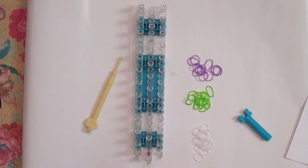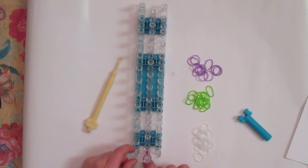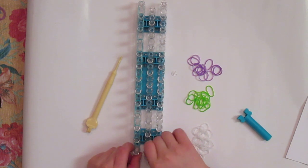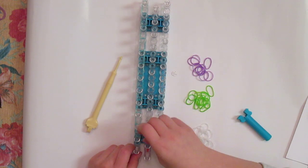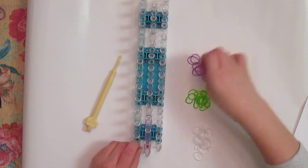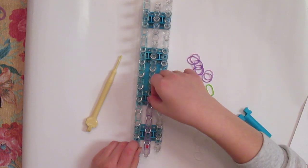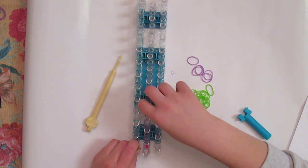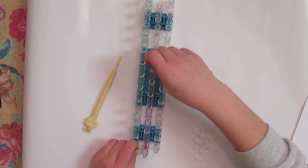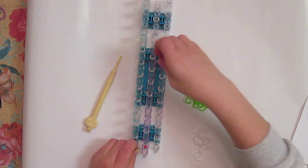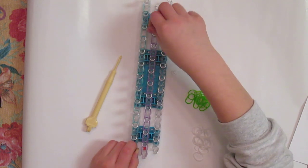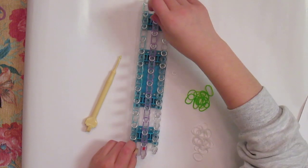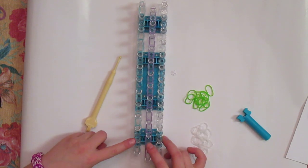Now I'm going to use my purple and you can use whatever color you've chosen. So from the center pin you have to go forward and then you go forward all the way to the last pin. Now that I've gotten all the way to the end, this is what your loom should look like.